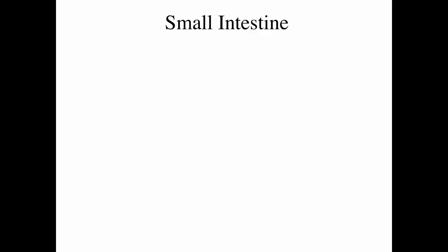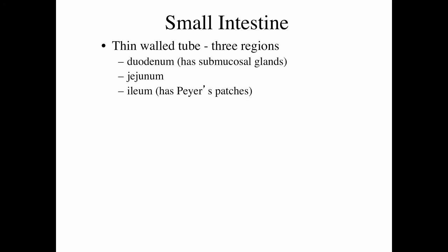The small intestine is a thin-walled tube. We can think of it as three regions or three distinct organs: the duodenum, which has submucosal glands or Brunner's glands; the jejunum; and the ileum. The ileum has structures called Peyer's patches, which are distinct lymphatic nodules. Lymphatic nodules can be found throughout the GI tract, but there are very large concentrations in the ileum, where these nodules are specifically known as Peyer's patches.